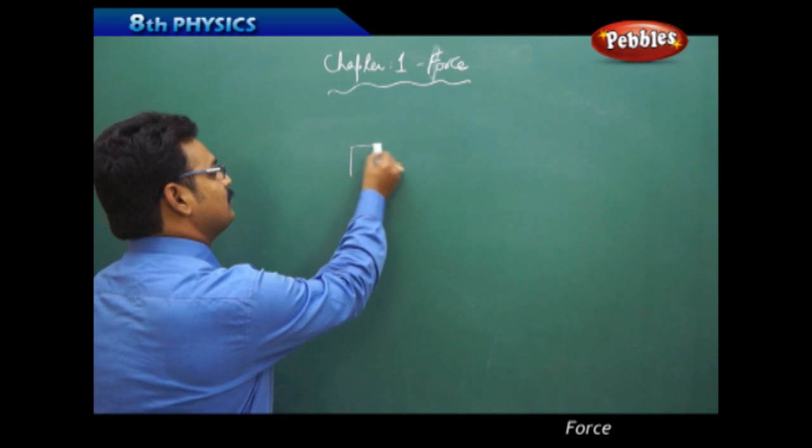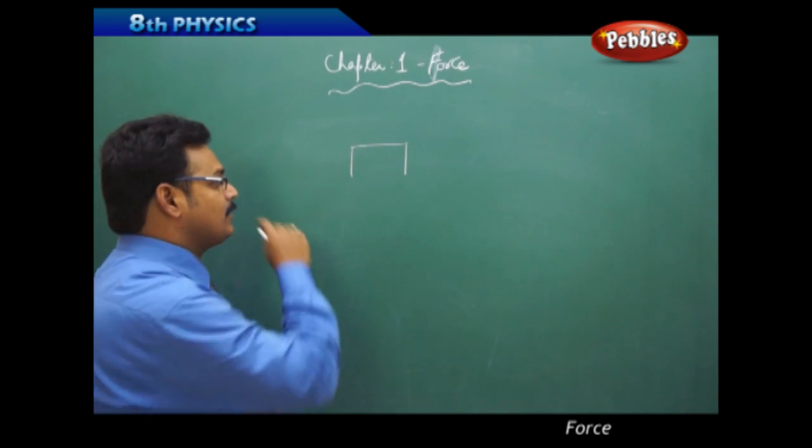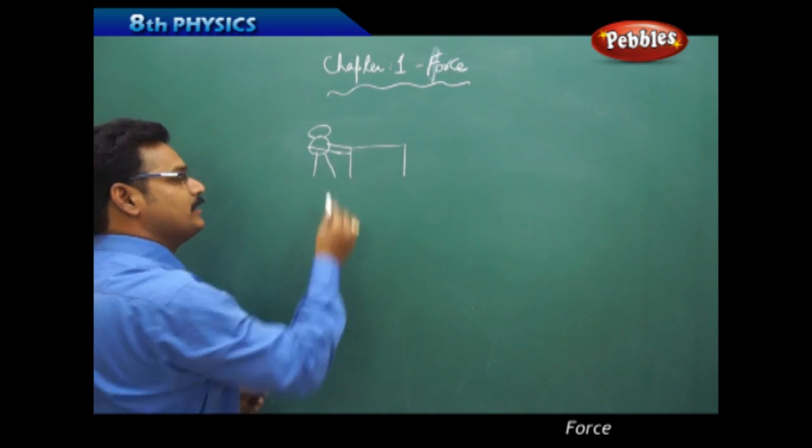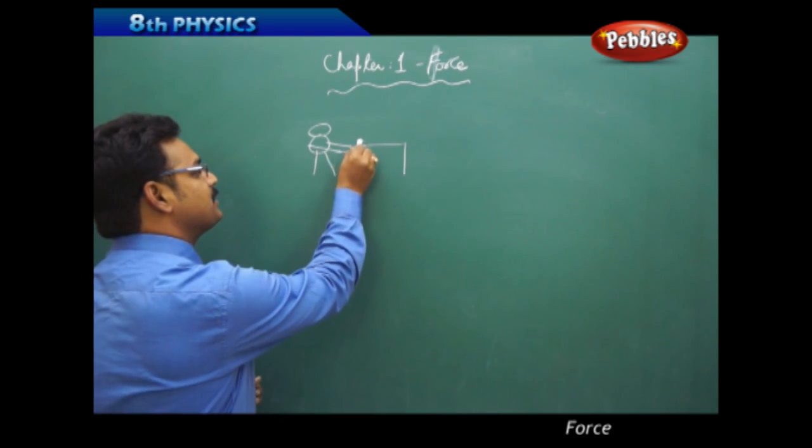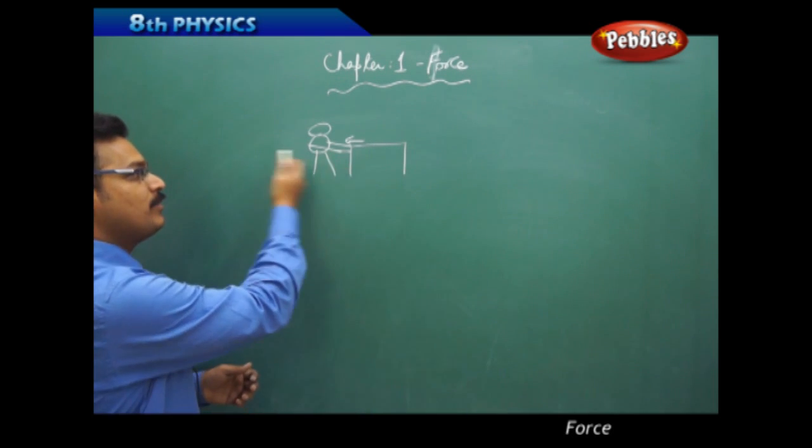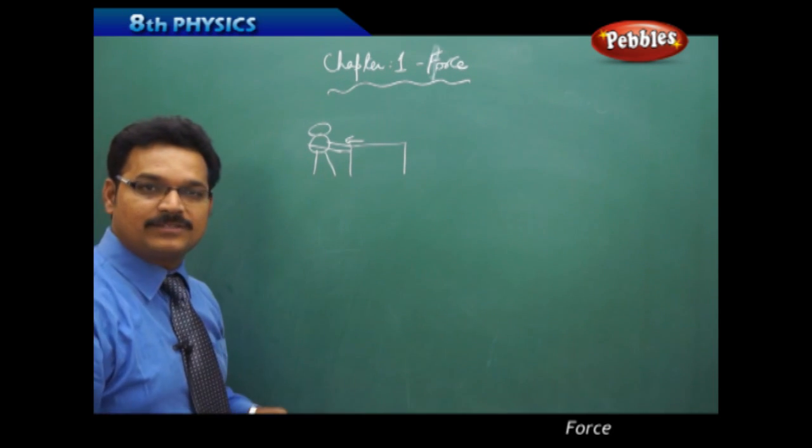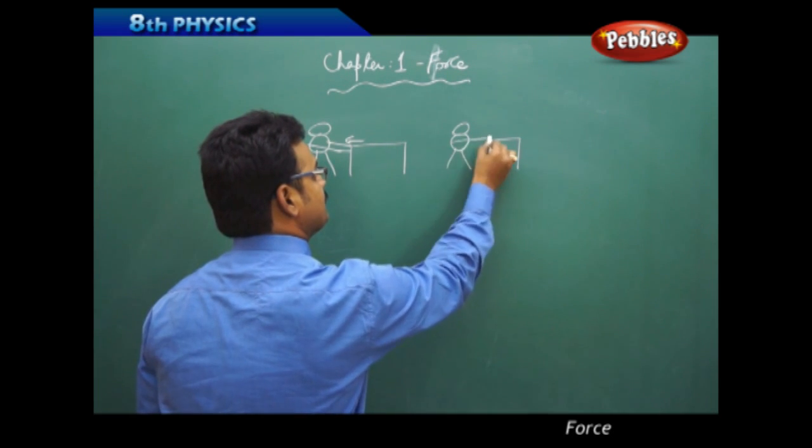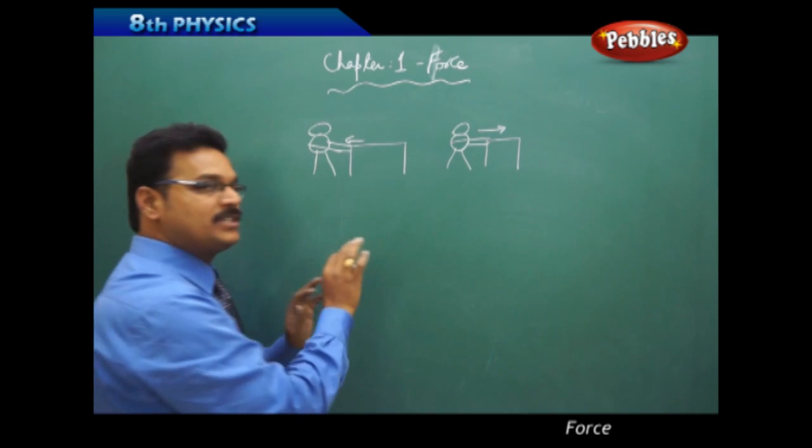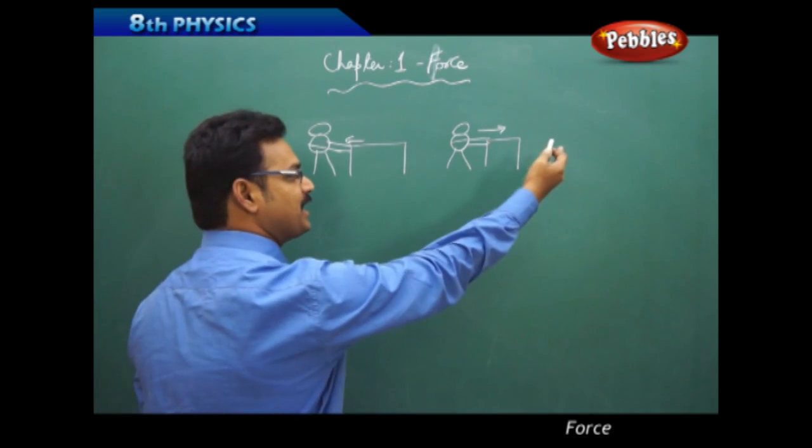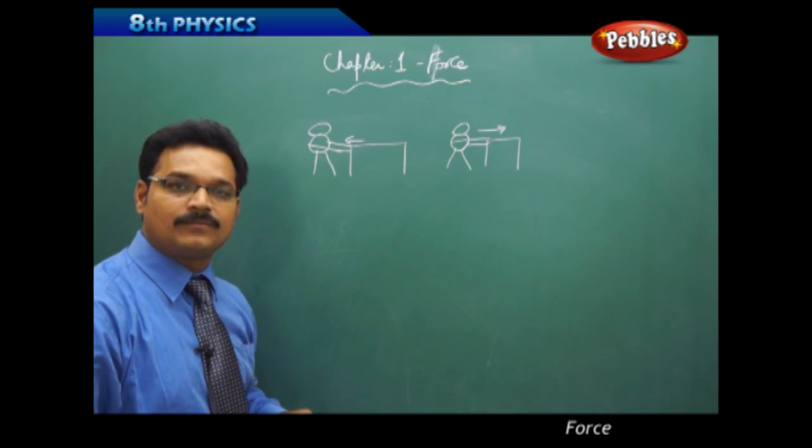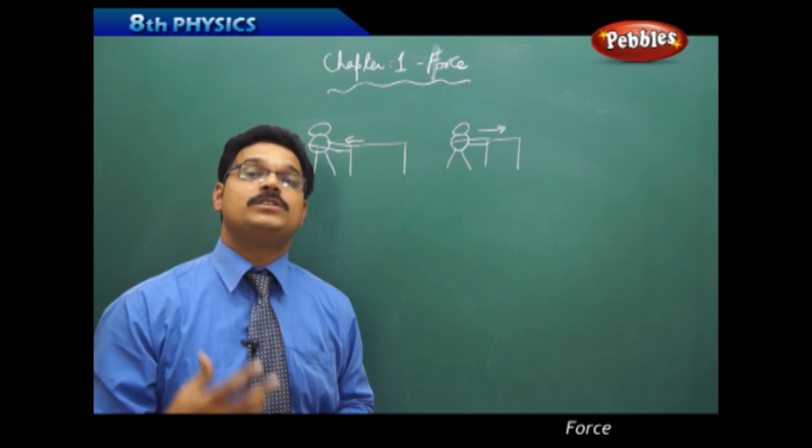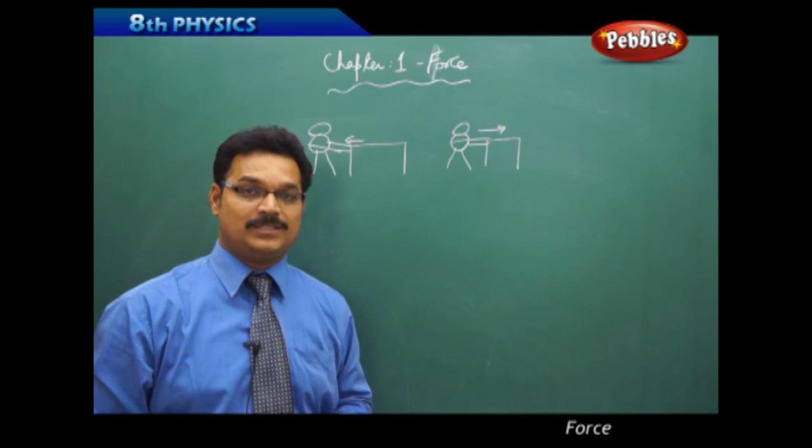Suppose you have a table and a person standing on the floor and he is pulling the table in this direction. The table is moving towards left side. Suppose the same person in another case is just pushing the table and the table moves in the forward direction. You want to open the door, what do we do? You pull the door. You want to close the door, what do we do? Yes we push the door.